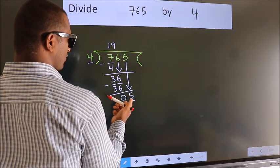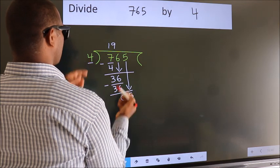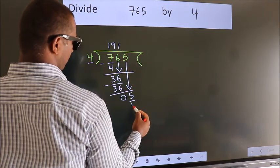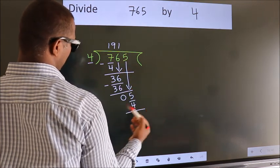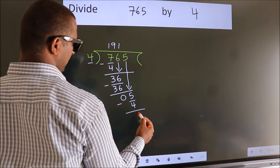A number close to 5 in 4 table is 4 ones, 4. Now, we subtract. We get 1.